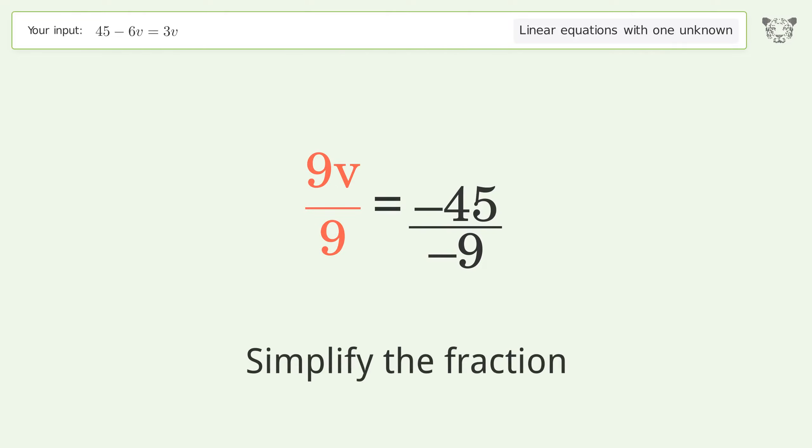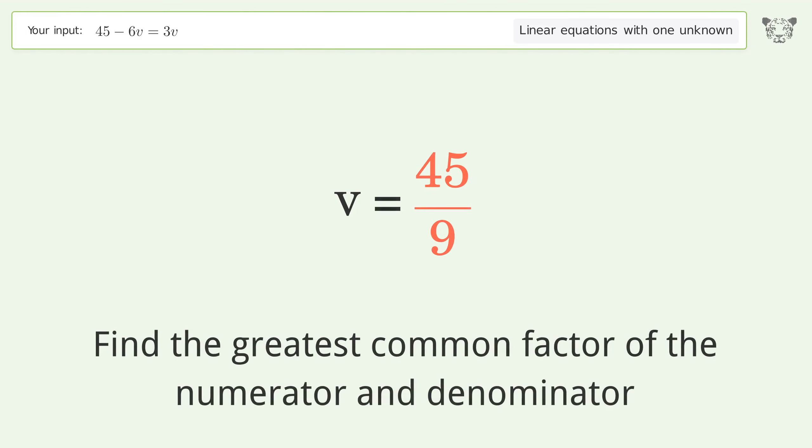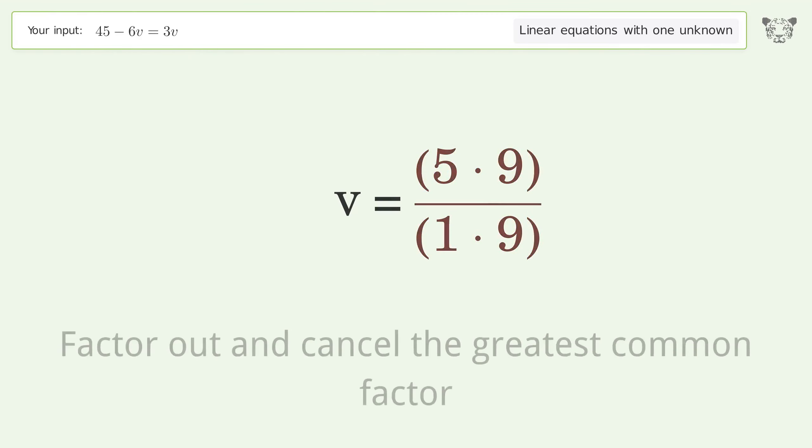Simplify the fraction. Cancel out the negatives. Find the greatest common factor of the numerator and denominator. Factor out and cancel the greatest common factor.